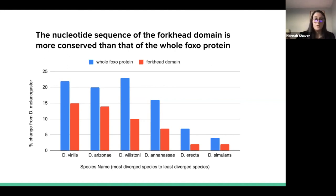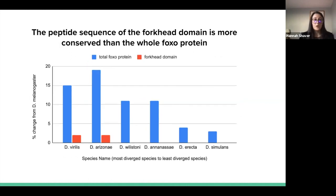We also have the same comparison method performed using peptide sequences. In both graphs we saw more conservation in the forkhead domain, so less percent change from D. melanogaster than the entire protein which is in blue with greater percent change. Synonymous or silent changes aren't represented in the amino acid sequence, so that's why we see less change overall for the peptide in comparison.